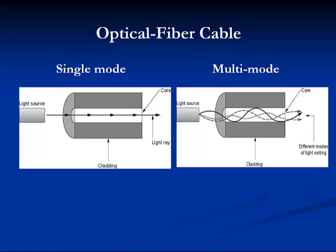Two varieties of optical fiber cable are commonly used in LANs today: single mode and multi-mode. Single mode is also used in MANs and WANs. Single mode fiber is an optical waveguide in which the signal travels in one mode or light path. It has a small core diameter — typically 8.3 micron — with a cladding size of 125 micron. For reference, the diameter of your hair is approximately 70 micron.